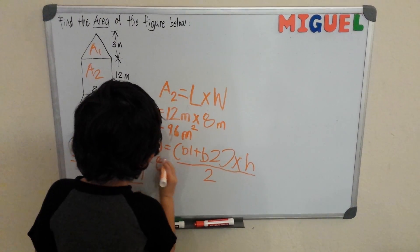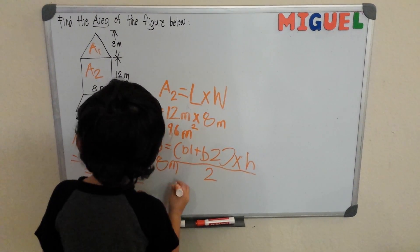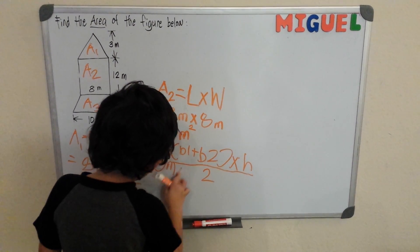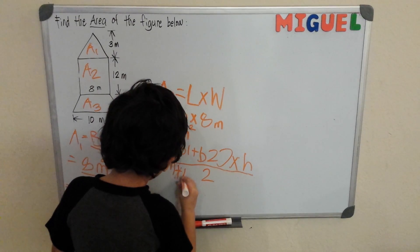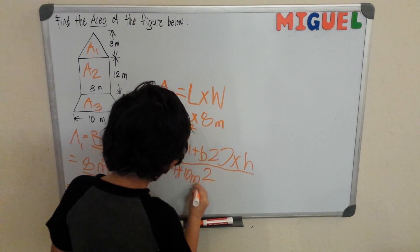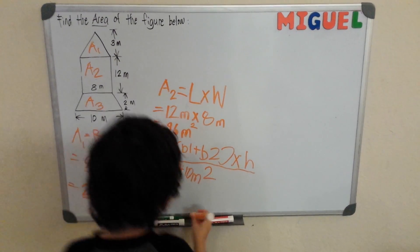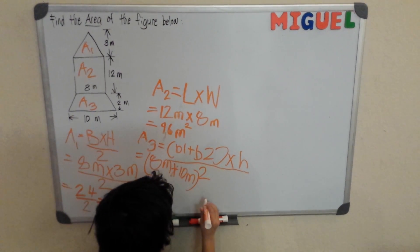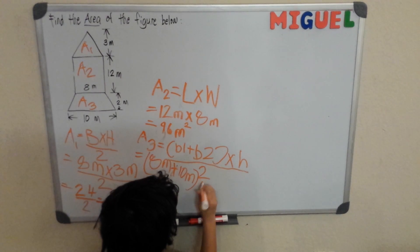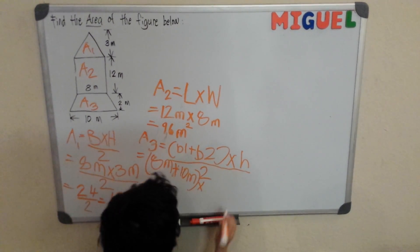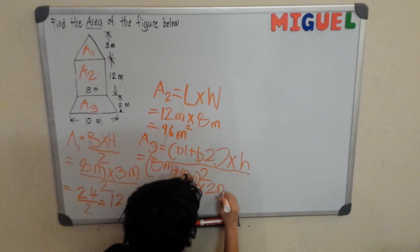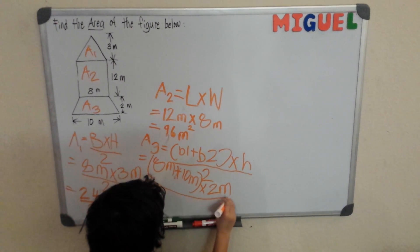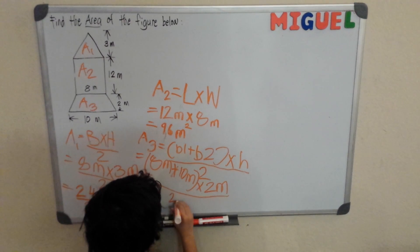So 8 meters, and we add it by 10 meters. And then we multiply it by 2 meters, divided by 2.